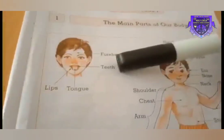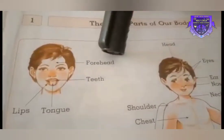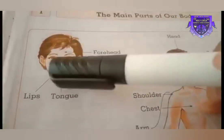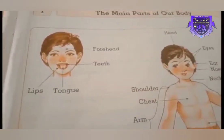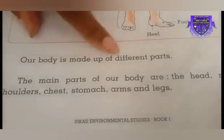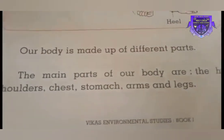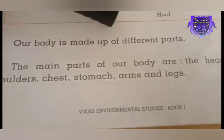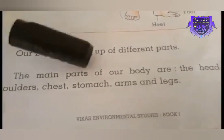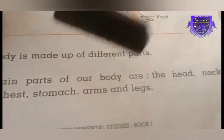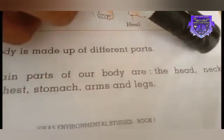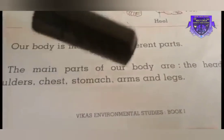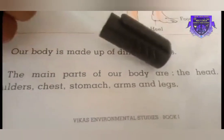The parts of our face are forehead, teeth, tongue, and lips. Our body is made up of different parts, and each part has a different use. The main parts of our body are the head, neck, shoulders, chest, stomach, arms, and legs.